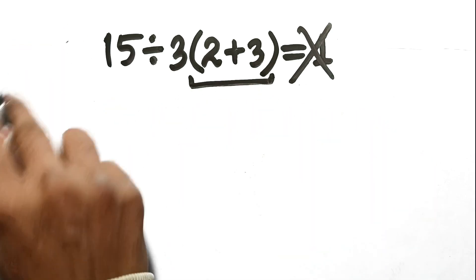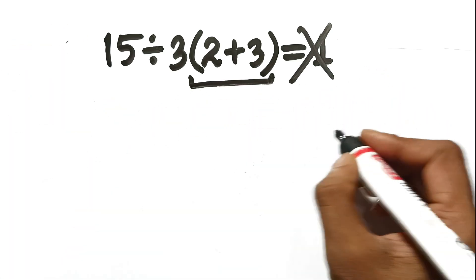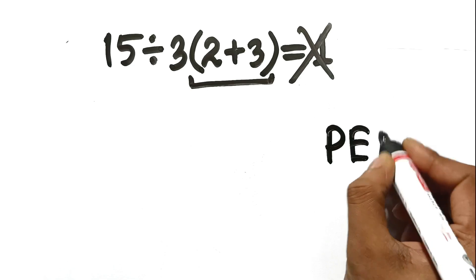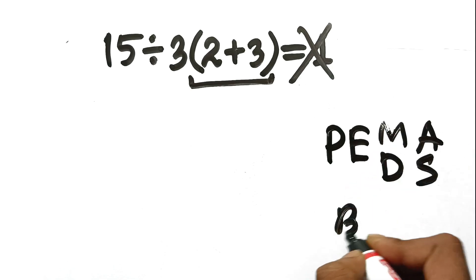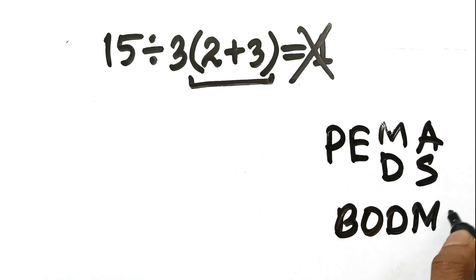So, why is the answer not 1? It's the classic order of operations mistake. Whether you use PEMDAS or BODMAS, the rules are incredibly strict about direction.